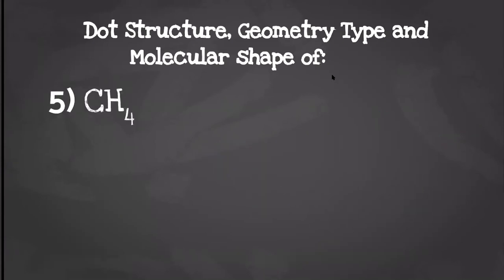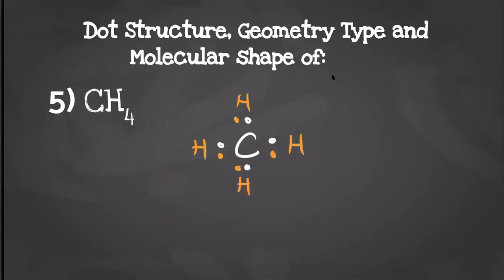For our next one we have methane. Carbon is going to have four valence electrons and each hydrogen is going to have one, so when we create our dot structure it should look something like this. It's going to give us a geometry type of AB4 because we have one center molecule with four things attached to it, and it's going to give us a molecular shape of tetrahedral.